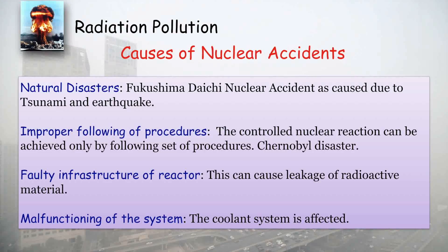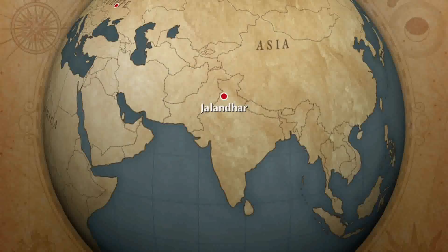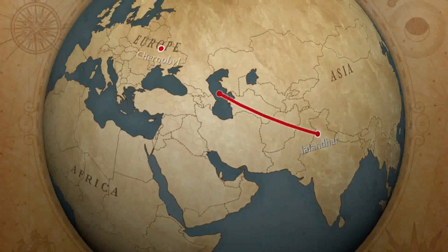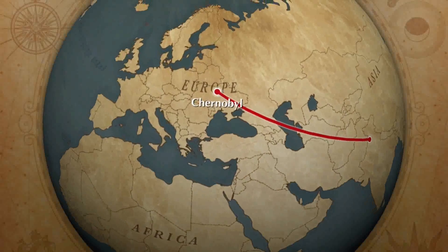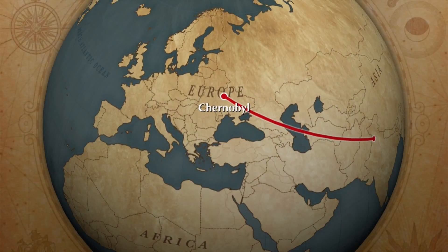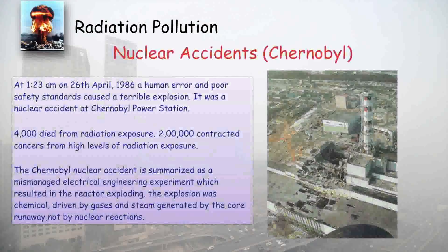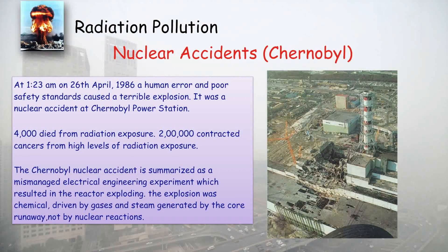The Chernobyl disaster happened in 1986 due to human error and poor safety standards, causing a terrible explosion at the Chernobyl power station. In this accident, 4,000 people died from the radioactive explosion, and almost 200,000 people were affected by cancers and high levels of radiation exposure.